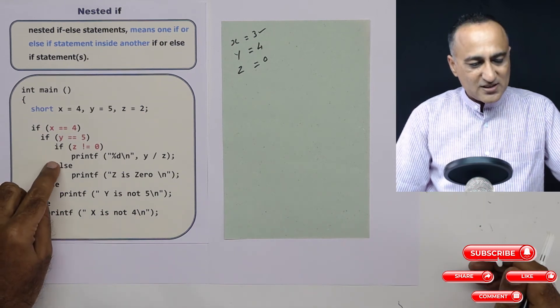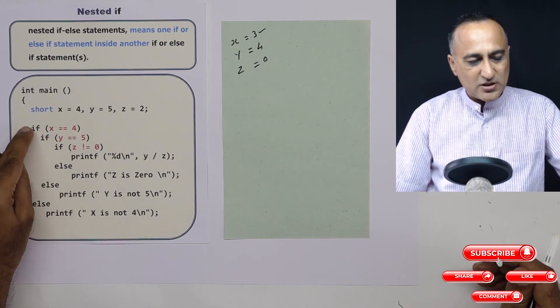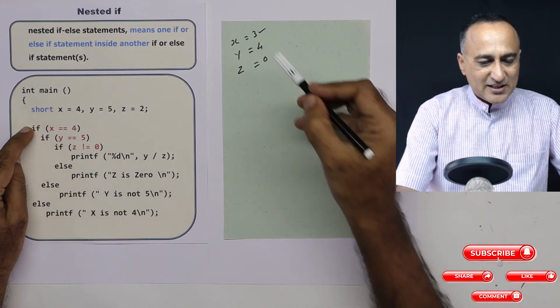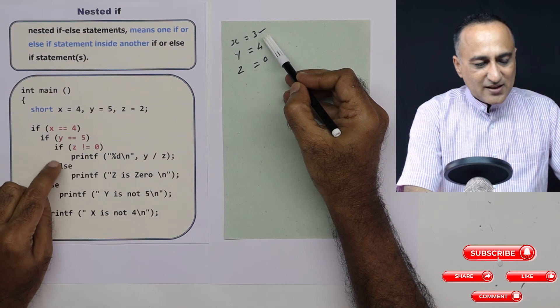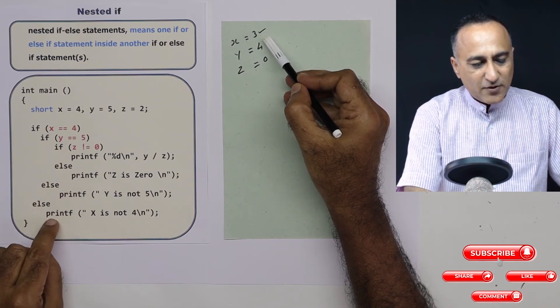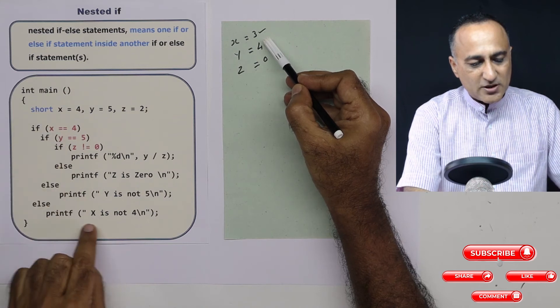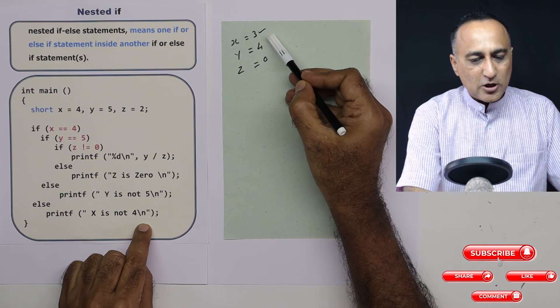So this if is, this else, this if is associated with this else, this else is associated with this if. That's why when I said x is equal to 3. Since this else was already joined with this, this else was already joined with this, so this if had to be, x had to be associated with this else and that's why it's going to print x is not 4.